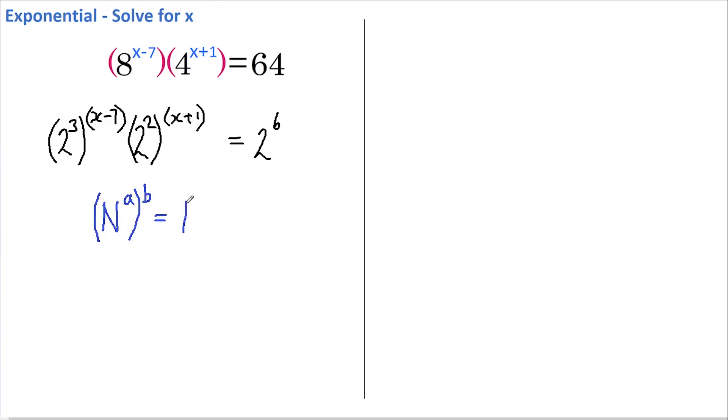That means we can rewrite this as 2 to the power of 3 multiplied by x minus 7, and 2 to the power of 2 multiplied by x plus 1, and that all equals 2 to the 6.